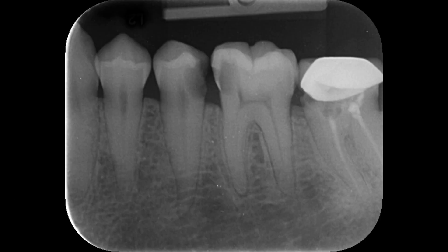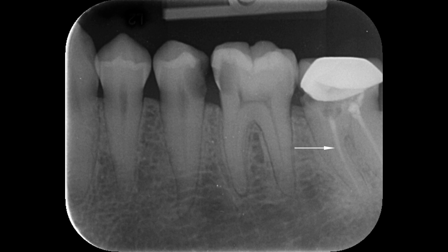This is the preoperative radiograph of the patient, where you can see the carious lesion at the mandibular second premolar tooth and the mandibular first molar tooth. The caries is at the contact area — the interproximal area — and both teeth are involved, which causes discomfort to the patient. You can also see that the patient had previously done root canal treatment of the second molar tooth, though the canals are not very well prepared.